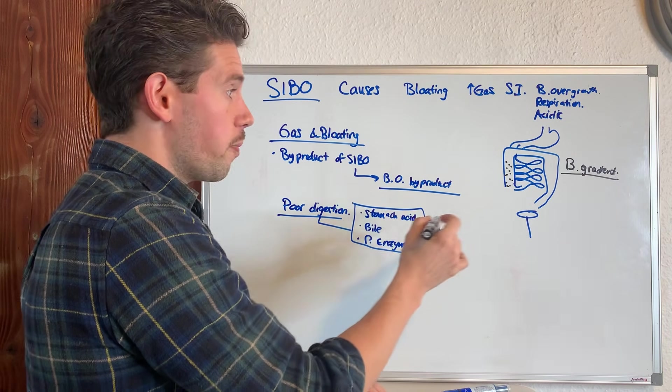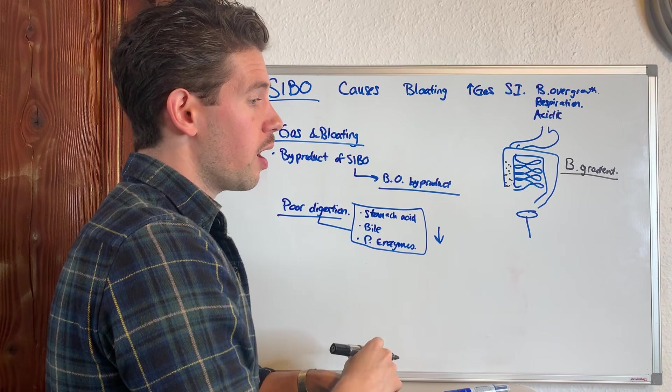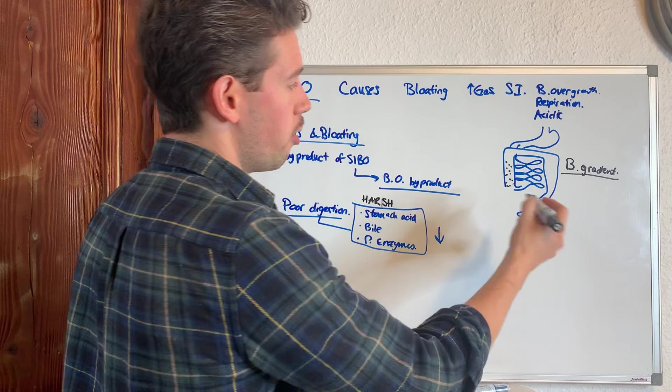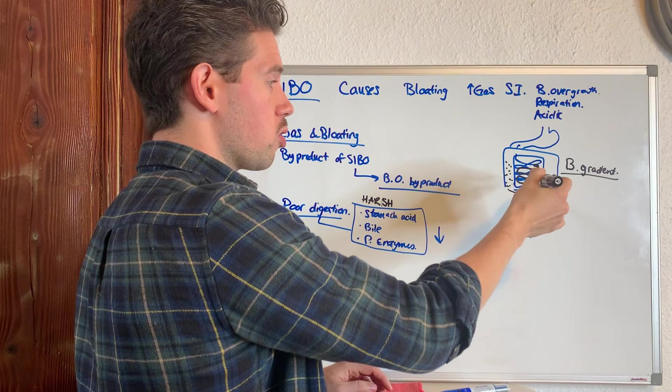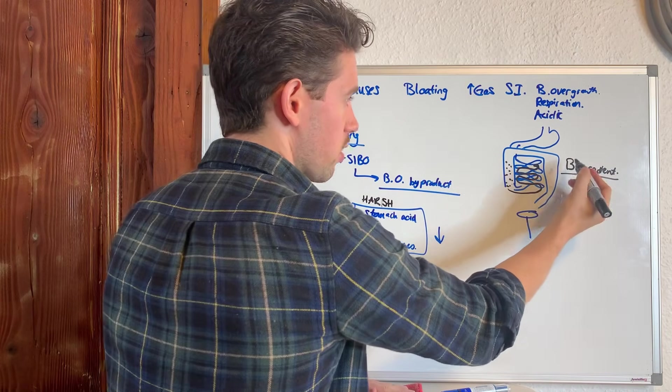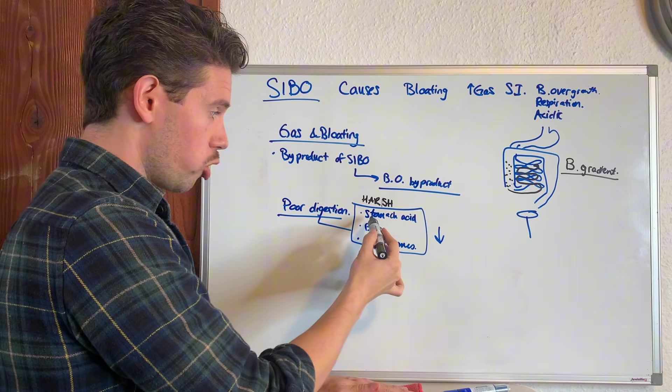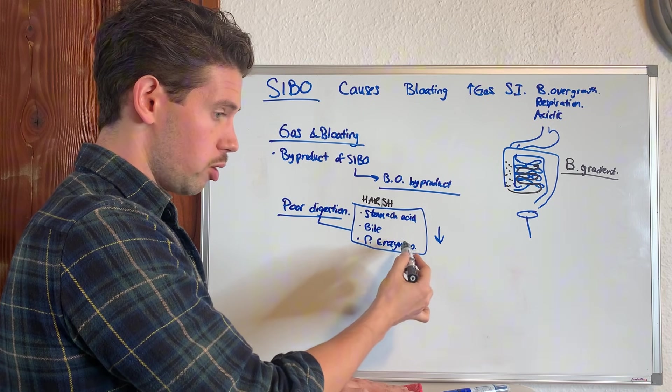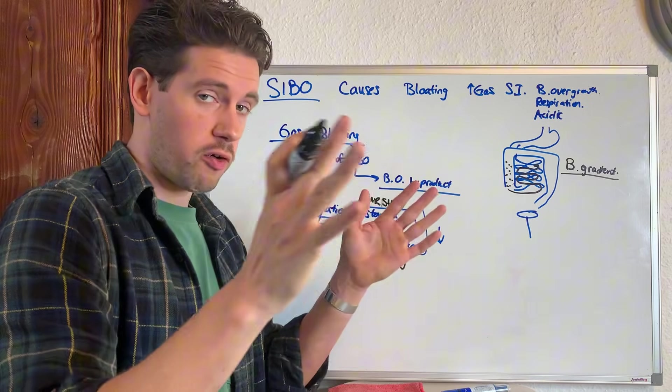And so when they get to be insufficient, the bacteria say, oh well, because there's less of these harsh chemicals that are keeping me in line, I now have the ability to backflow up more and take hold. And so the idea is to address the bacterial gradient that is happening within the digestive system. But when you refocus and you look at your stomach acid production, your bile salt release, and your pancreatic enzyme release, and you amplify these, when you reamplify, these bacterial gradients will then start falling back into line.